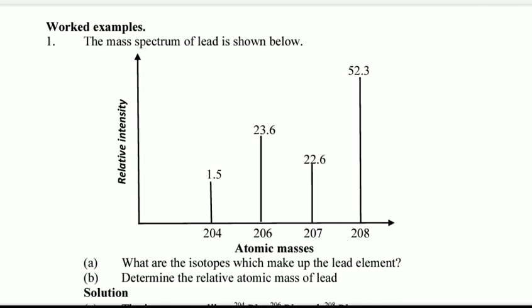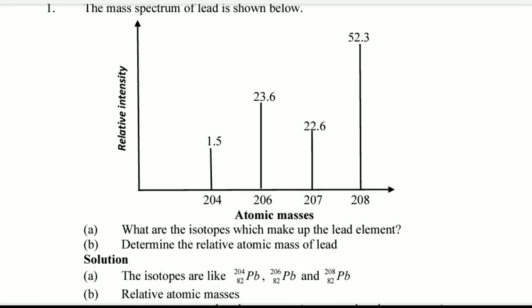Another isotope 206, 207, 208, and the relative abundance of each. What are the isotopes which make up the lead element? This is the mass spectrum of lead. You can see there are four isotopes.